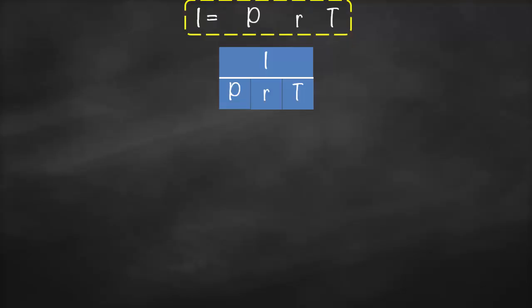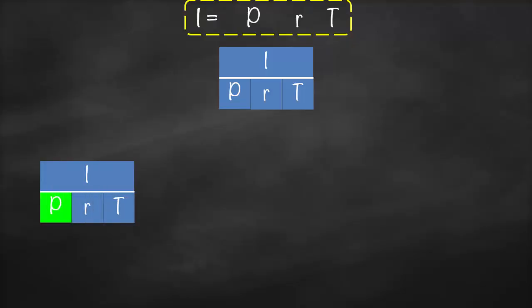What if we'd like to find the principal? Therefore, our principal is equivalent to our interest amount divided by simple interest rate multiplied by time. This will be our second formula.